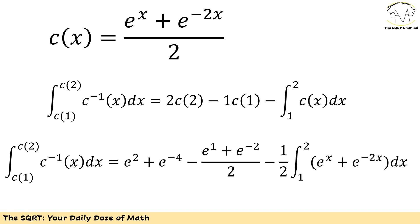Now I have c of x as defined before. I need to find the integral of c inverse of x dx between c of 1 and c of 2. To do that, I'm going to use what we saw before. It is equal to 2 times c of 2 minus 1 times c of 1 minus the integral of c of x dx between 1 and 2.